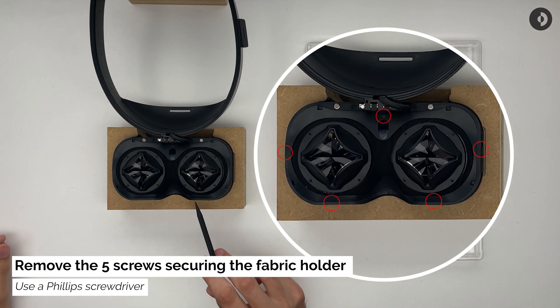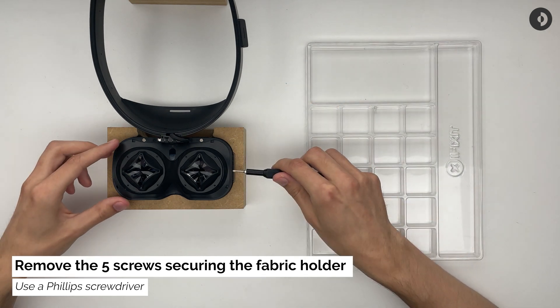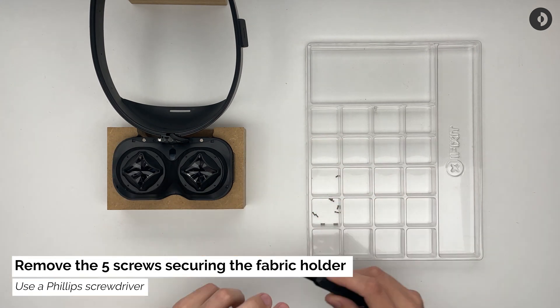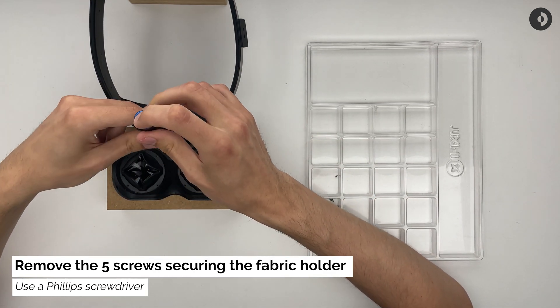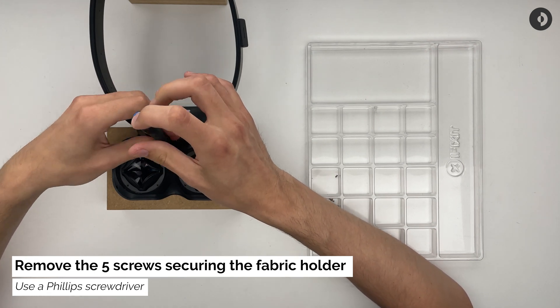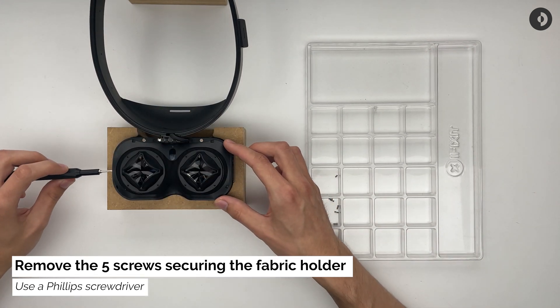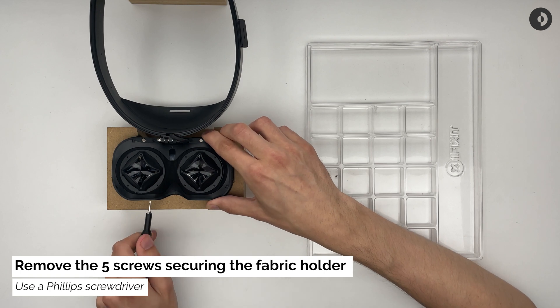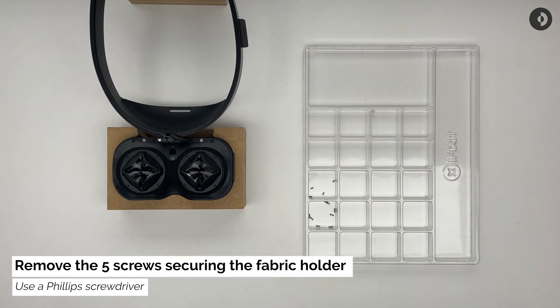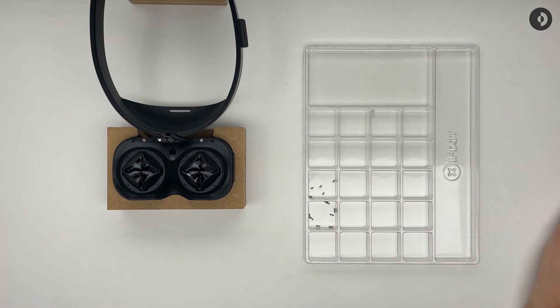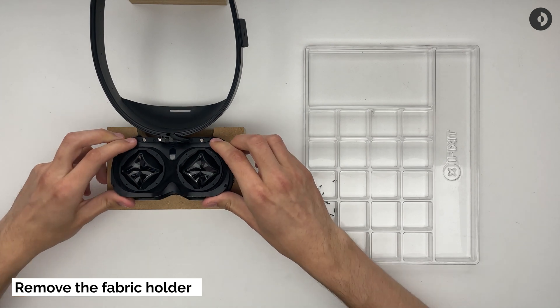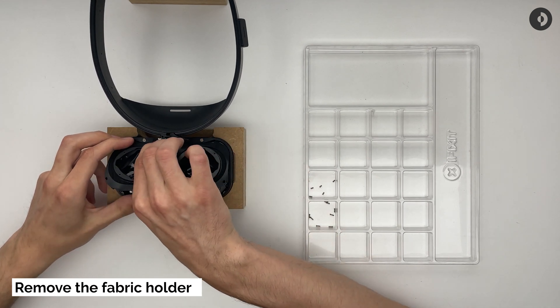Remove the 5 screws securing together the fabric holder and the rest of the headset. You will find 1 screw on each side, left and right, 2 screws at the bottom and the last screw just above the proximity sensor. Once all screws have been removed, you can use a spatula or your fingers to lift up the bottom part of the fabric holder. Now that the bottom part is free, press from side to side in order to unclip it from the rest of the shell.